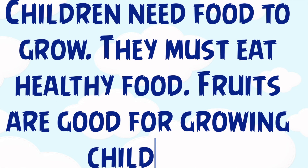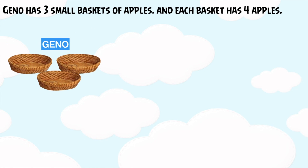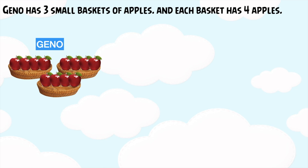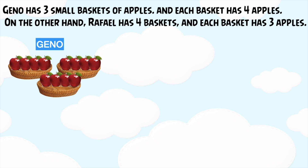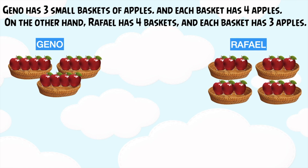Children need food to grow. They must eat healthy food. Fruits are good for growing children. Gino has three small baskets of apples, and each basket has four apples. On the other hand, Raphael has four baskets, and each basket has three apples. The question is, who has more apples?